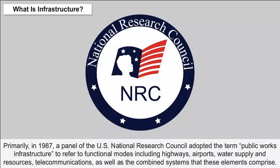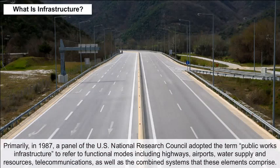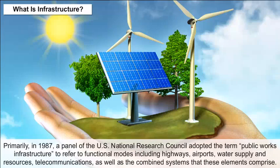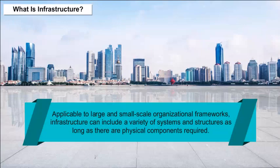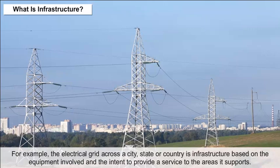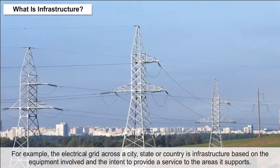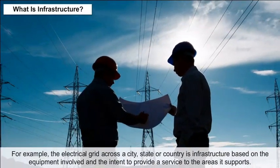Primarily, in 1987, a panel of the U.S. National Research Council adopted the term 'public works infrastructure' to refer to functional modes including highways, airports, water supply and resources, and telecommunications, as well as the combined system that these elements comprise. Applicable to large and small-scale organizational frameworks, infrastructure can include a variety of systems and structures as long as there are physical components required. For example, the electrical grid across a city, state, or country is infrastructure based on the equipment involved and the intent to provide a service to the areas it supports.